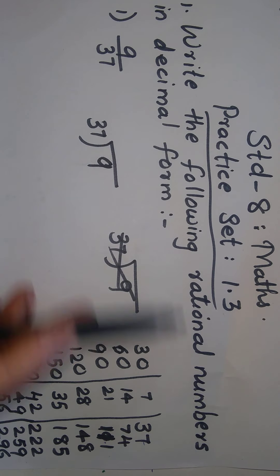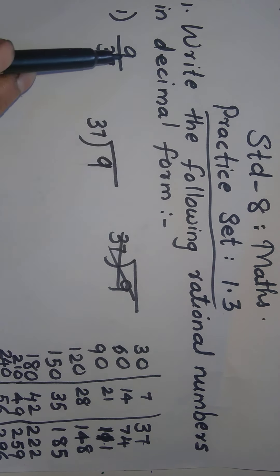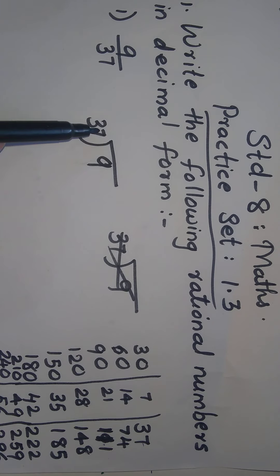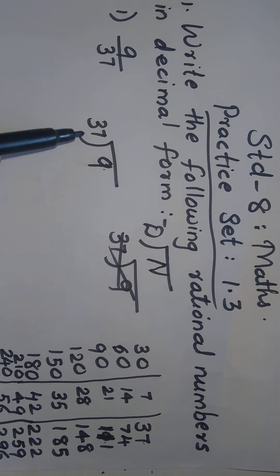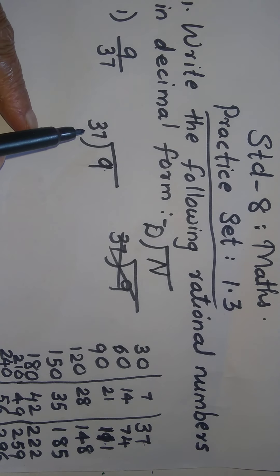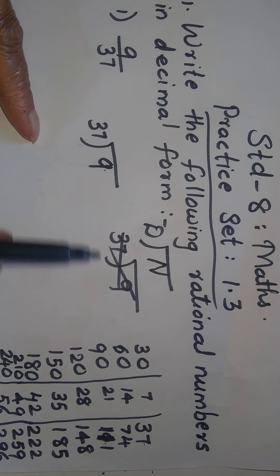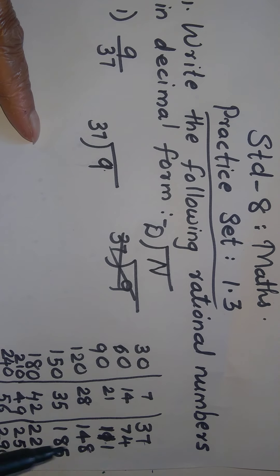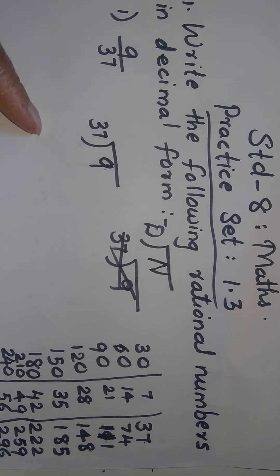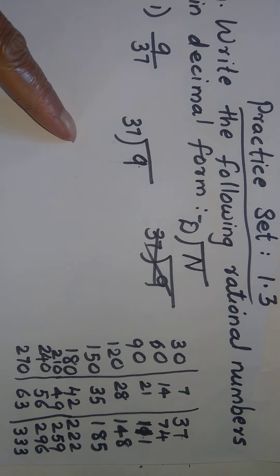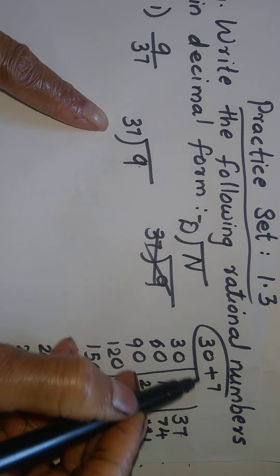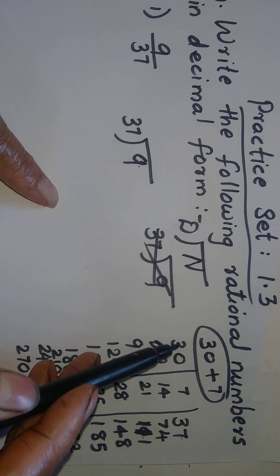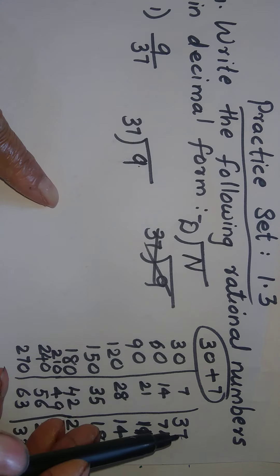Write the following rational numbers in decimal form: 9 upon 37. What do we need to do? Numerator divided by denominator. The 37 times table is needed here — it is very easy. 37 is 30 and 7. To make the 37 table, we can take the 30 table and 7 table and add them together.